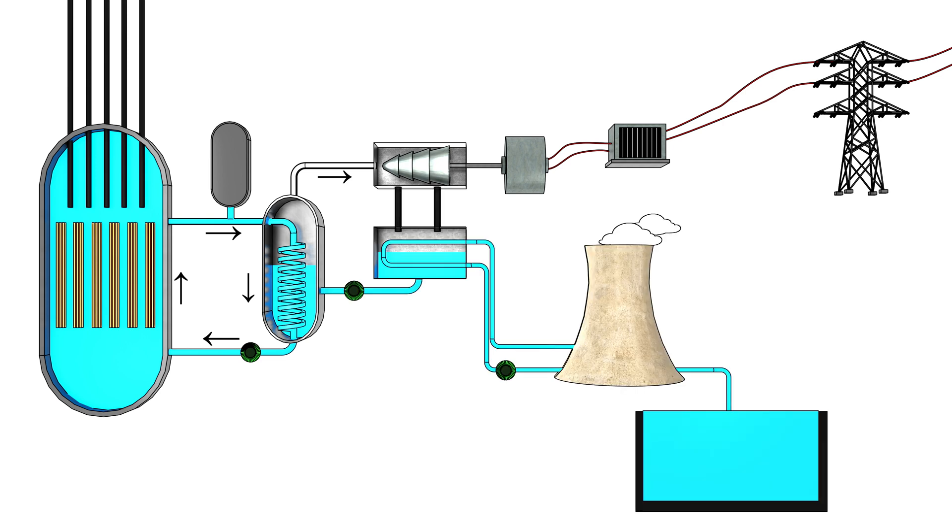The steam coming from the turbine passes through a condenser which cools down the steam and condenses it to water, and the condensed water is again passed to the steam generator to heat it again to steam.